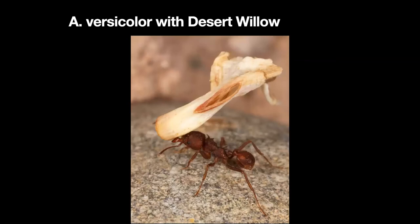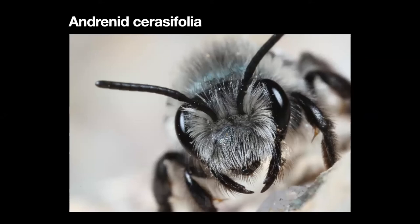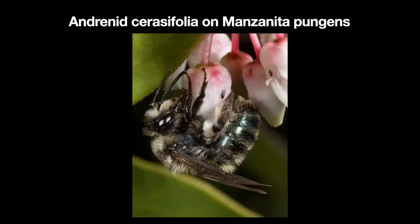Here's another Acromyrmex versicolor worker bringing back a dead flower from a desert willow. Now we come to the bees — this is Andrena saracifolia, the female, also called miner bees. They are some of the major pollinators. When you go out and look at our manzanitas, Arctostaphylos pungens or whatever, you'll see little holes on the sides — Andrena makes those holes. Other bees and even little butterfly blues will use those holes to access nectar.